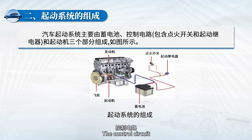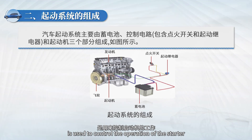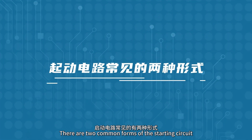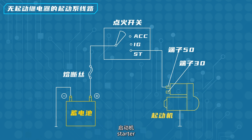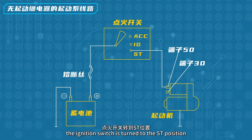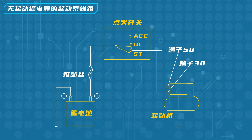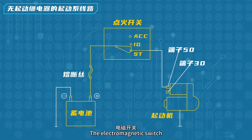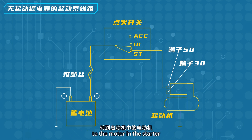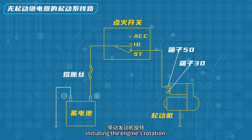A control circuit is used to control the operation of the starter. There are two common forms of the starting circuit. The first does not have a starting relay and is composed of the battery, starter, and ignition switch. During start, the ignition switch is turned to the ST position, connecting the electromagnetic switch of the starter, which links the positive pole of the battery to the motor, causing the starter to rotate and initiating the engine's rotation.